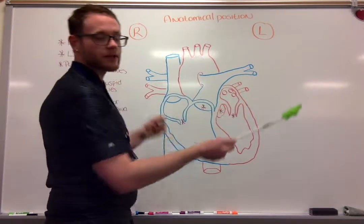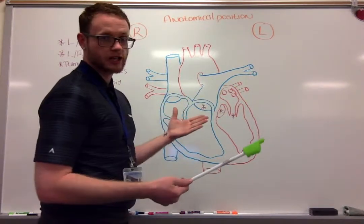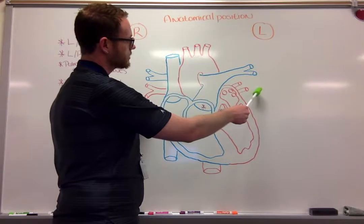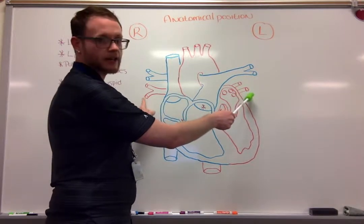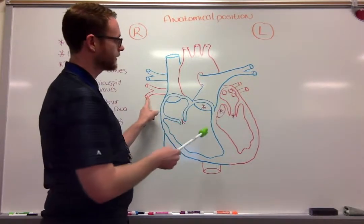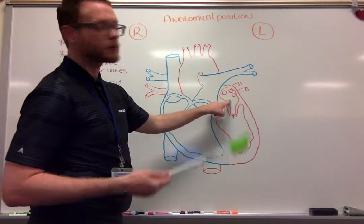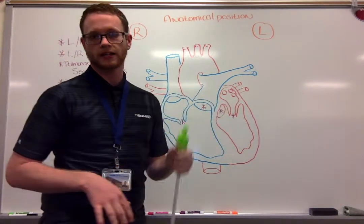When the blood, now oxygenated, returns back to the heart through the pulmonary veins — the left and the right pulmonary veins — it empties into our left atrium.